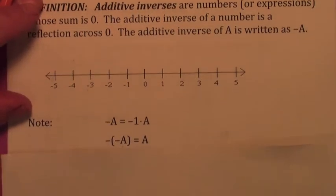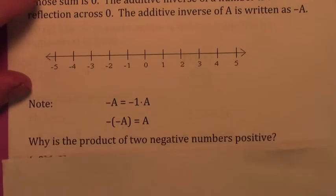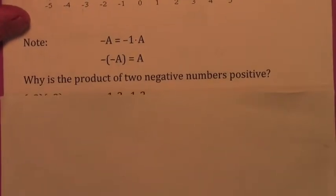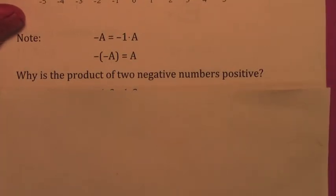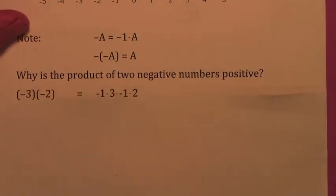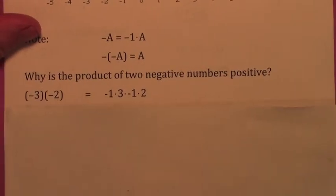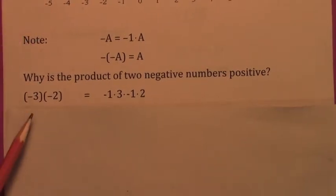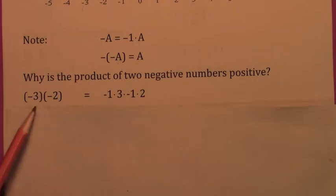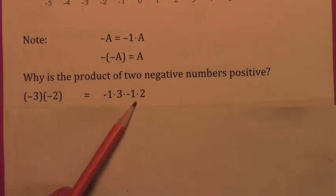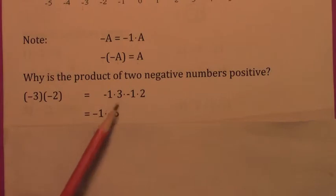That last fact can be used to answer the question: why is the product of two negative numbers positive? Let's look at negative three times negative two. You could write it like this — remember, negative three means negative one times three, and negative two means negative one times two. Then if you multiply the last three numbers together, three times negative one times two is negative six.